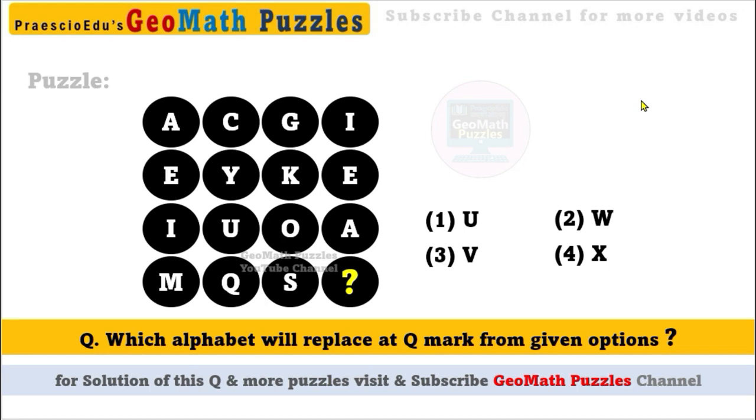Hello, welcome to GeoMath Puzzles. On screen you can see a puzzle where some alphabets are shown. The question mark is shown at one dot, and on every dot there is an alphabet.